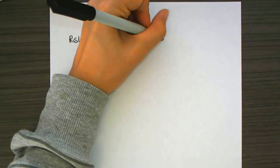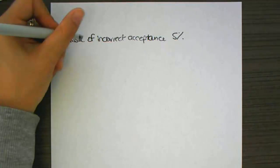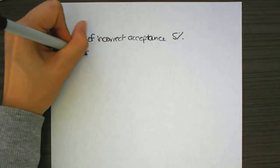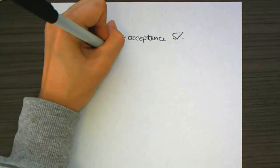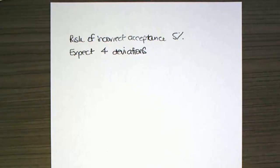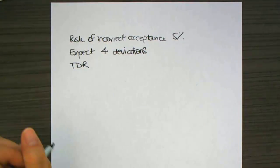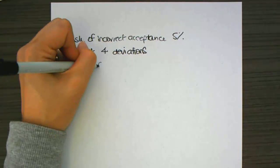The first one is the risk of incorrect acceptance. It's going to be 5%. We're going to expect 4 deviations. And the tolerable deviation rate allowed, according to my audit manager, it's going to be 6%. Alright, so how do we start this?